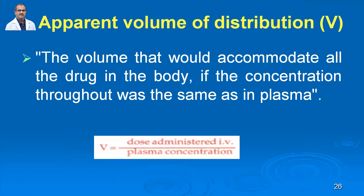An important pharmacokinetic term is the apparent volume of distribution, denoted as capital V. There are many pharmacokinetic terms, and one should understand these terminologies carefully, because pharmacokinetics often involves formulas.